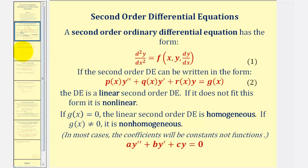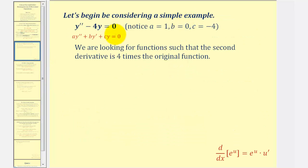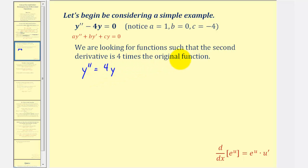Let's begin by looking at an example. Let's say we want to find the general solution to y double prime minus four y equals zero. Notice if we compare it to this form, a, the coefficient of y double prime, would be one; b would be zero because there's no y prime in the equation; and c would be negative four, the coefficient of y. So if we took this equation and added four y to both sides, we could write y double prime equals four y, which means we're looking for functions such that the second derivative is equal to four times the original function.